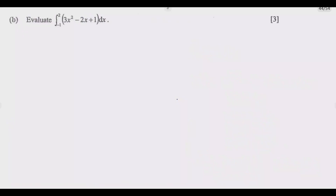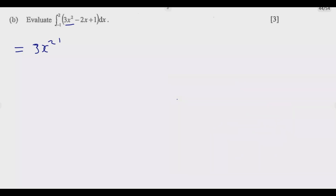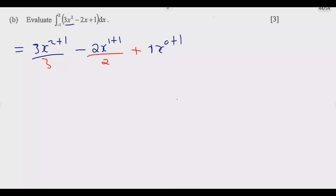Now let us answer the last part, which asks us to evaluate the definite integral. It is simply a matter of integrating and then substituting. Integrating 3x² - 2x + 1: we raise each power by 1 and divide by the new power. So 3x² becomes 3x³/3 = x³; -2x becomes -2x²/2 = -x²; and 1 becomes x. The integrated expression is x³ - x² + x, evaluated from -1 to 2.